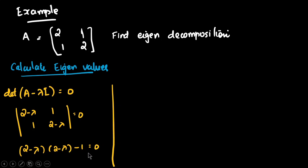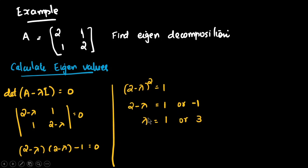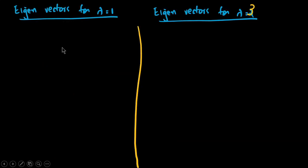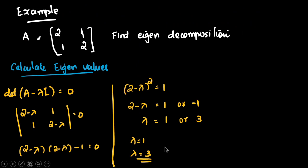Solving (2−λ)² = 1 means (2−λ) can be 1 or −1. So lambda can be 1 or 3. These are the two eigenvalues, lambda equals 1 and lambda equals 3.